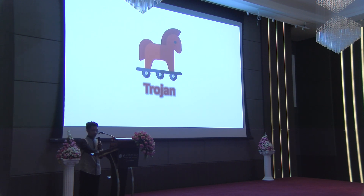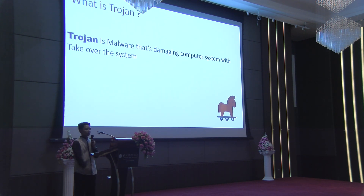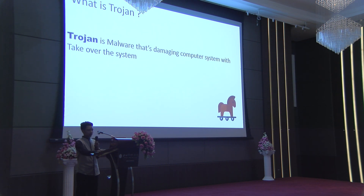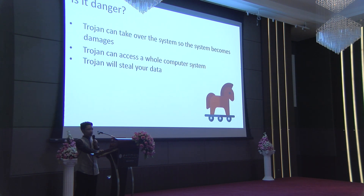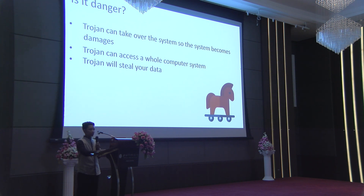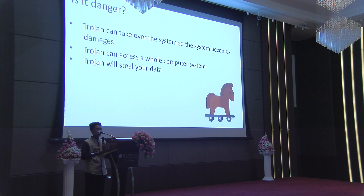The third is a Trojan. Trojans are programs made to look like useful programs for computer users, but when installed they can spy on the system, steal data, and send keystrokes to an address specified by the author without being noticed. Trojans can be dangerous because they can take over your system — for example using a camera to spy from a distance — and Trojans can also corrupt your system so data is easy to steal.